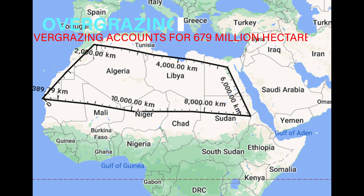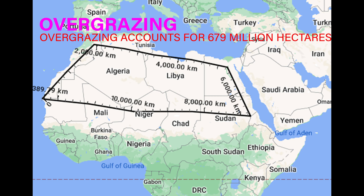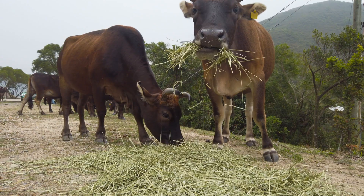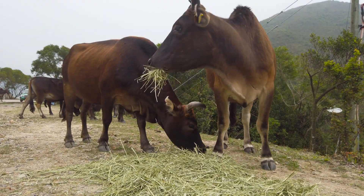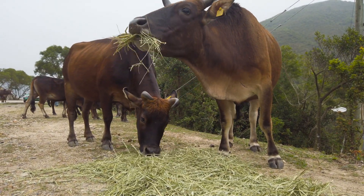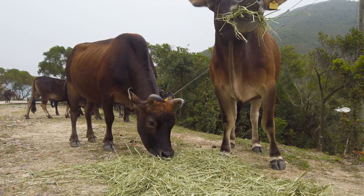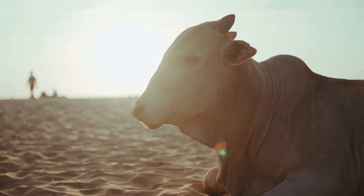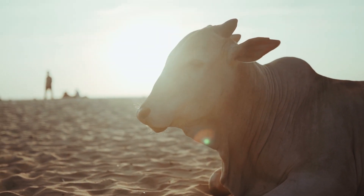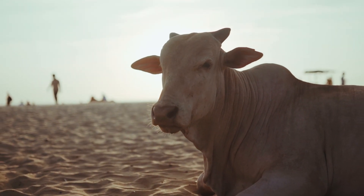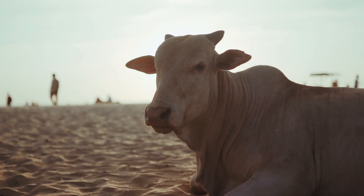Vegetation overgrazing is most destructive where cattle congregate near watering holes, degrading the soil. Overgrazing accounts for 679 million hectares, making it by far the most significant source of human-induced soil degradation in Africa and Asia. Stockgrazing is the most common use of dry land, and is often considered a significant contributor to desertification.